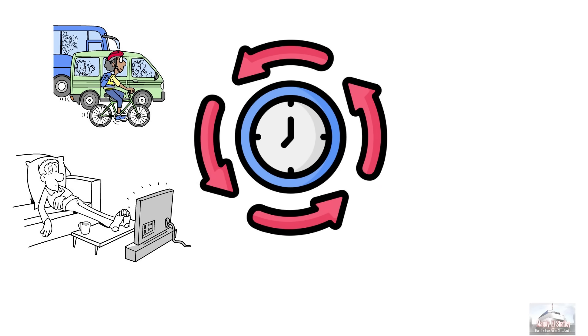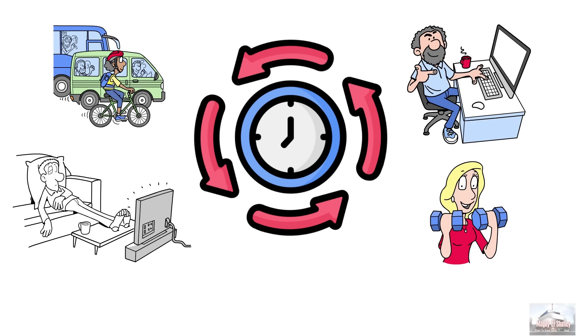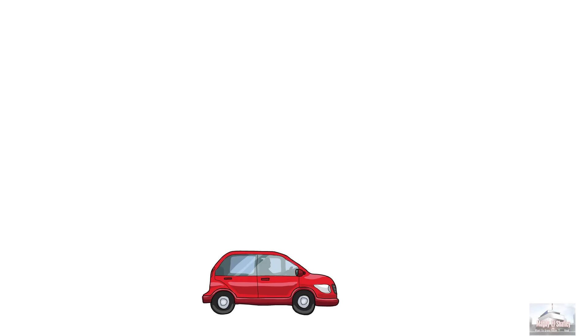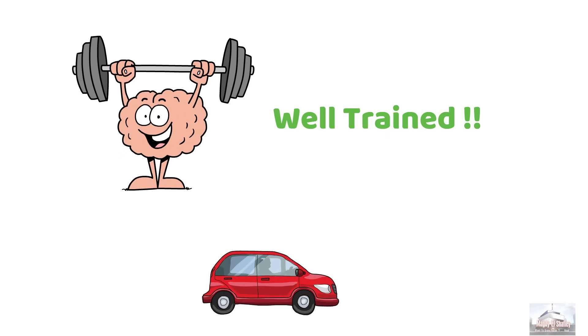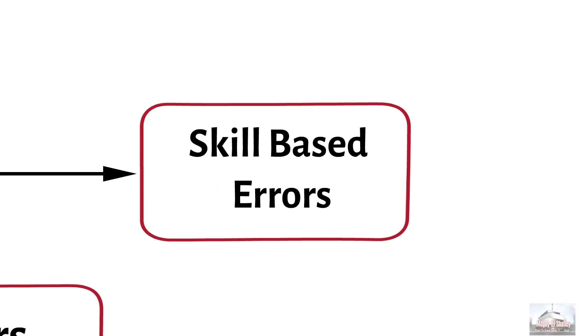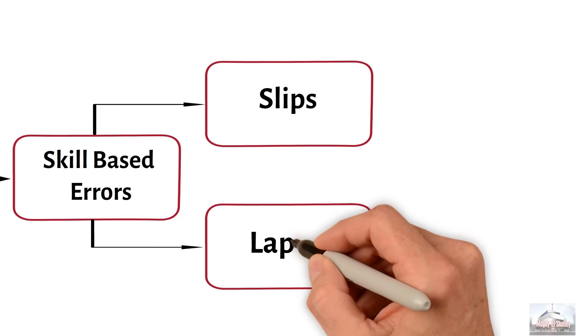These tasks are called skill-based because they are carried out based on learned skills. A common example is driving a car, which many of us perform without thinking about each action. Even experienced, well-trained, and highly motivated individuals can make these types of errors. Skill-based errors are divided into two categories, slips and lapses.